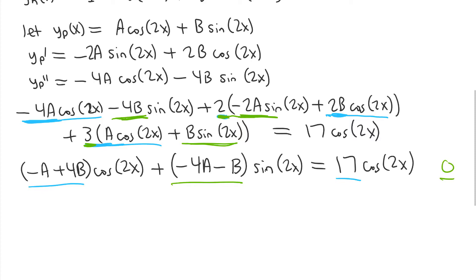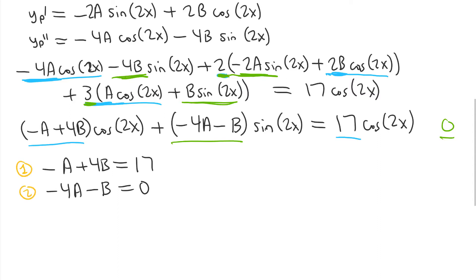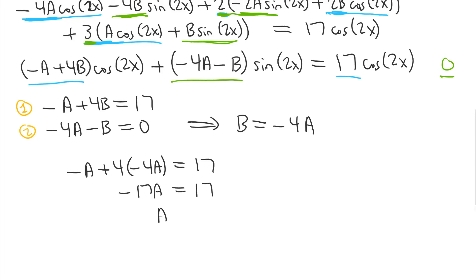Equating coefficients, the cosine coefficient gives: negative A plus 4B equals 17, and the sine coefficient gives: negative 4A minus B equals 0. We have two equations and two unknowns. From the second equation, b equals negative 4A. Substituting into the first: negative A plus 4 times negative 4A equals 17, giving negative 17A equals 17, so A equals negative 1. Then B equals negative 4 times negative 1, so B equals 4.